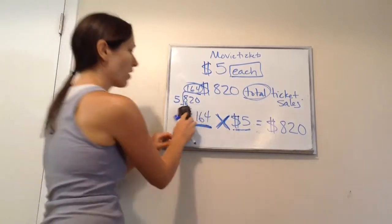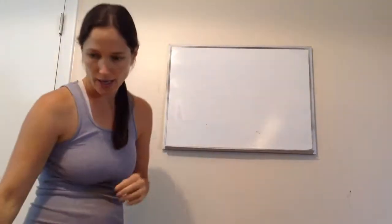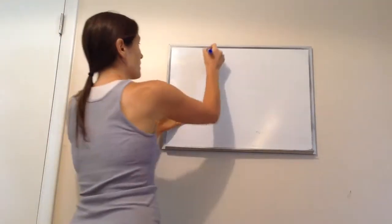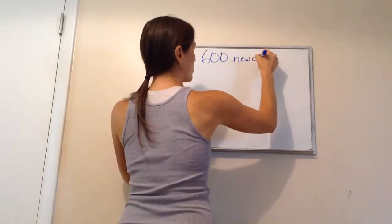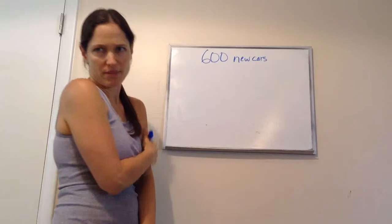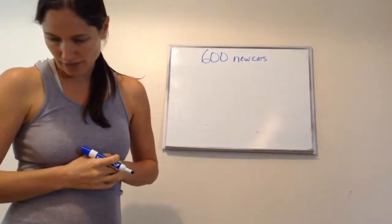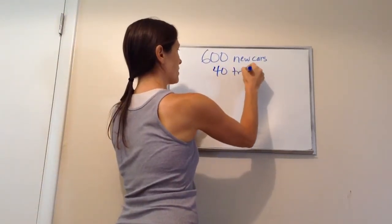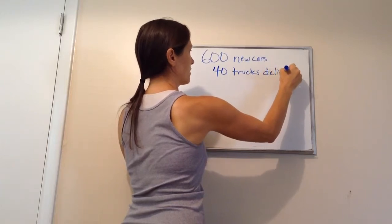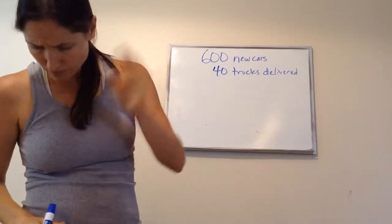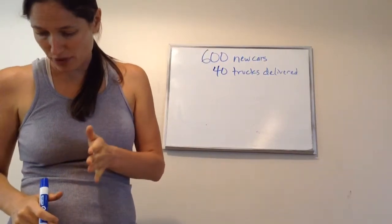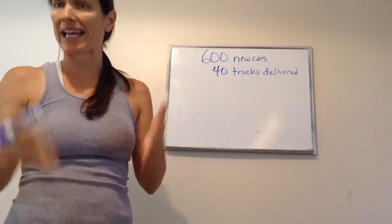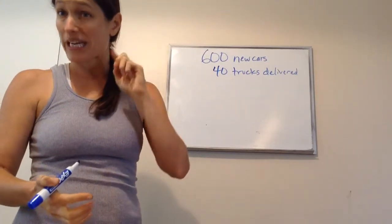Alright, last problem. You're going to help me out with this one. 600 new cars were delivered to the dealer. 600 new cars delivered to the dealer. Maybe I should write that down, but I think it's okay. Let's see if that's enough information. And it was delivered by 40 trucks. 40 trucks delivered these. And it says this. Each truck carried the same number of cars. How many cars were delivered by each truck? Did you hear that word? Each.